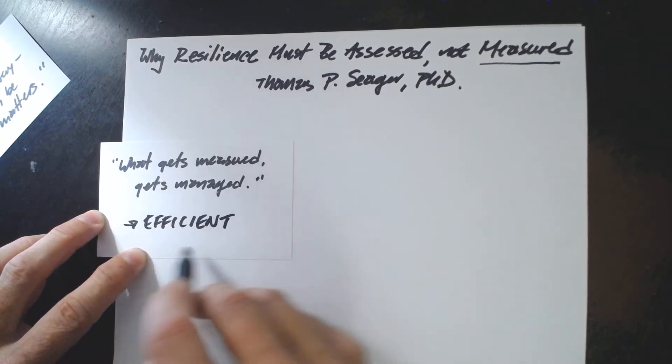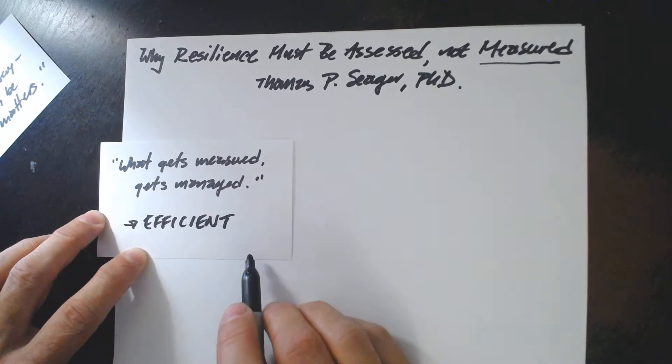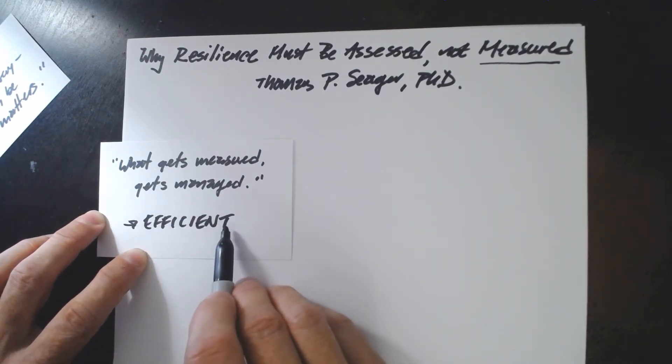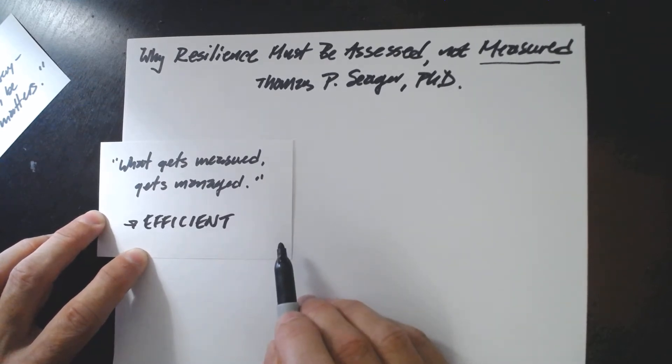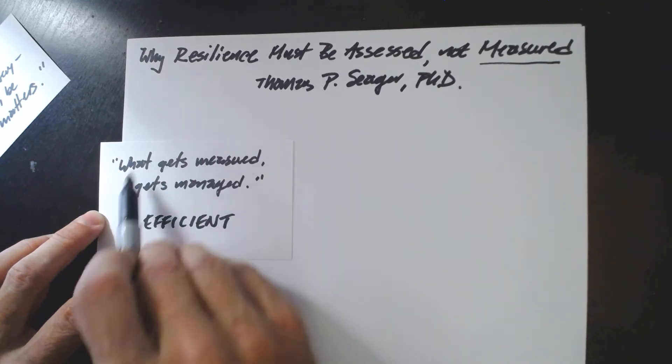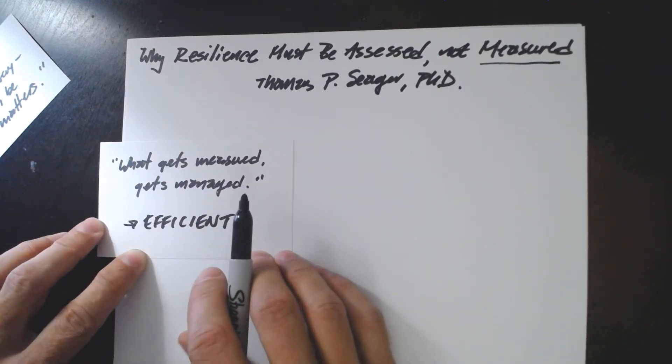Because when we're measuring and managing, we can make things more efficient. It is this efficiency that makes us rich. It is efficiency that allows us to reduce costs, reduce prices, increase the size of the market, capture economies of scale. It is efficiency on which the industrial revolution was founded.